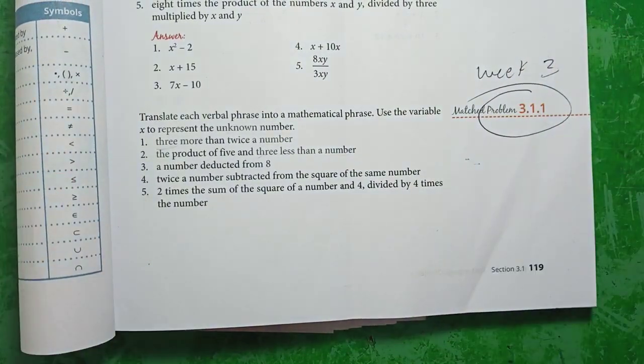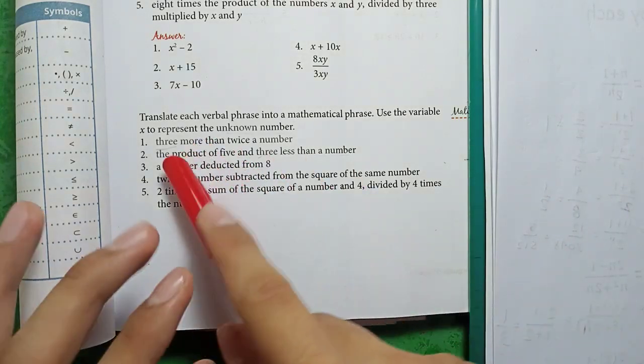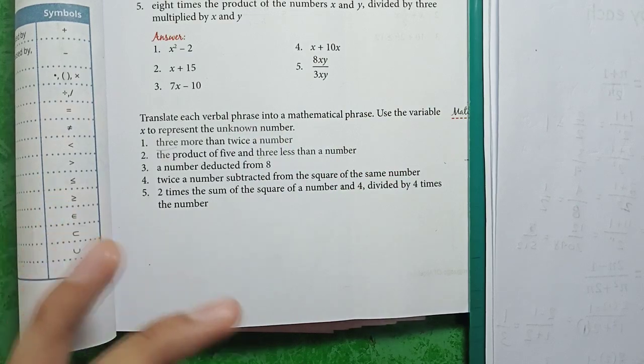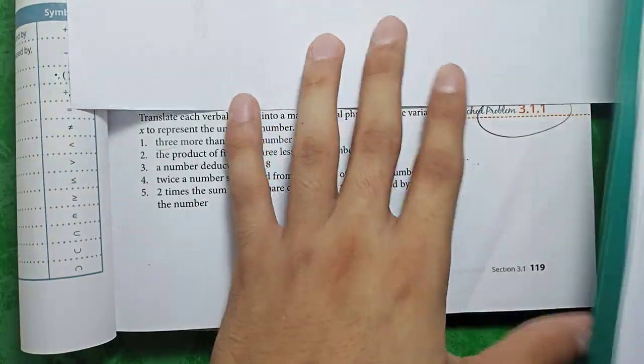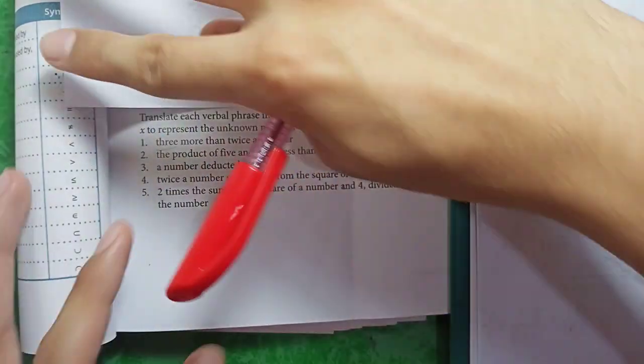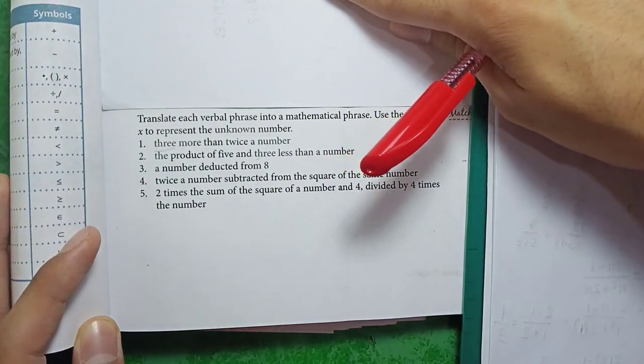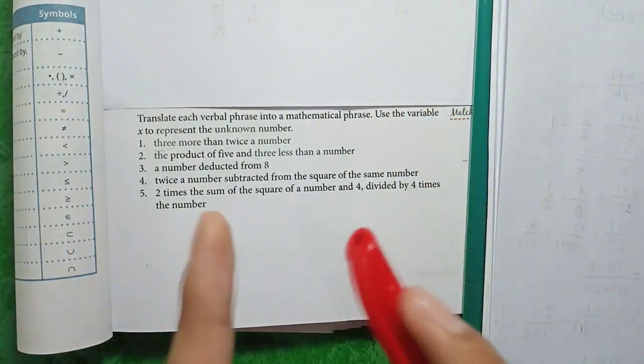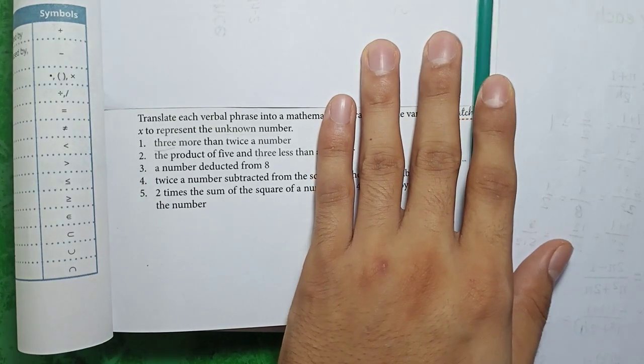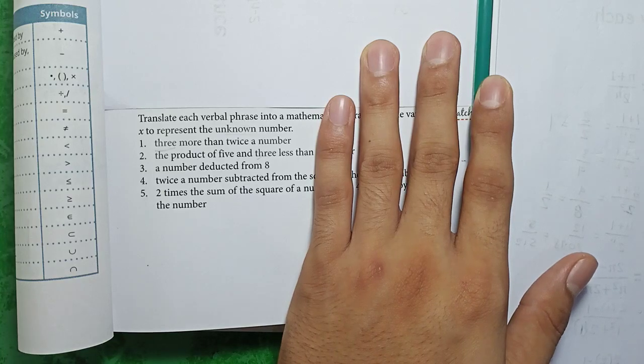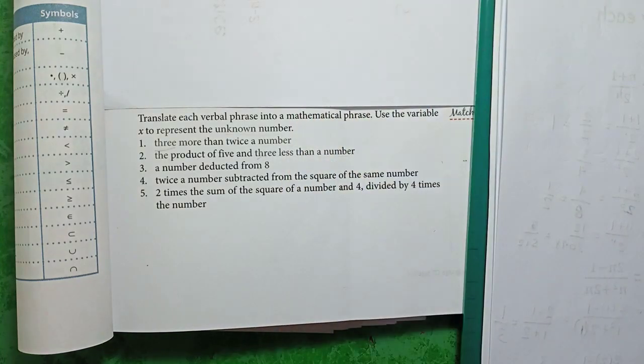So then, 3.1.1. Let's try to read this. Translate each verbal phrases into mathematical phrases. Use the variable x to represent the unknown number. So in here, there is clear guidelines that we are going to use variable x only for the unknown number.